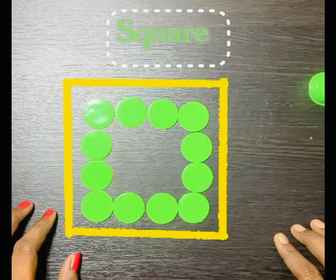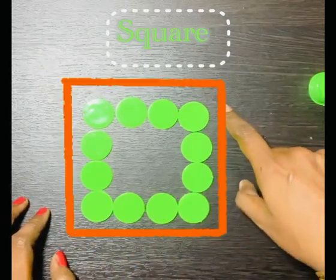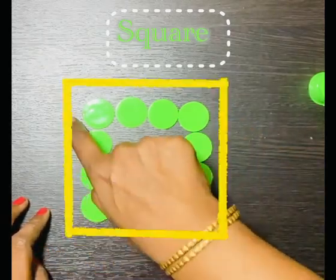So, square. Square has 4 sides. 1, 2, 3, 4.